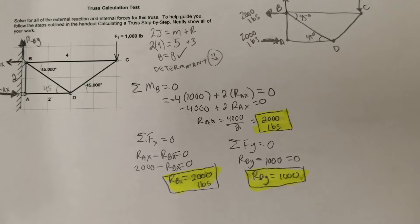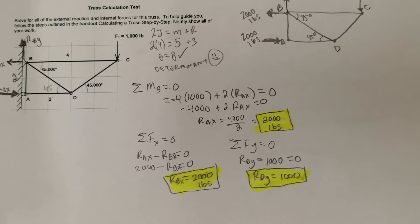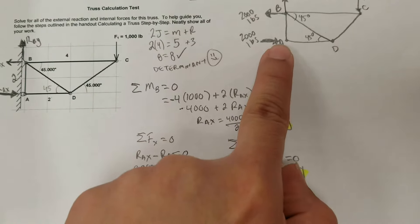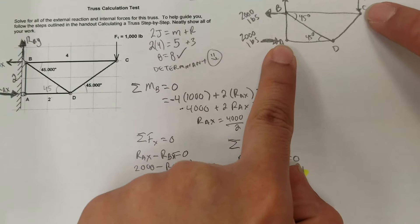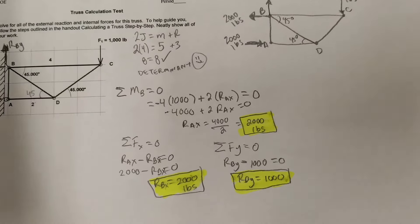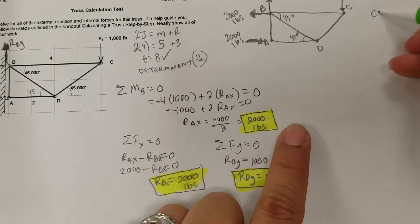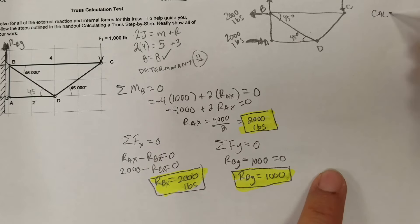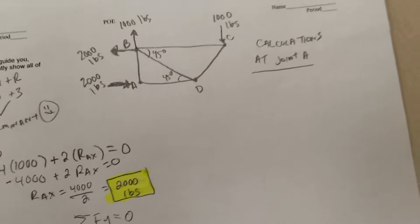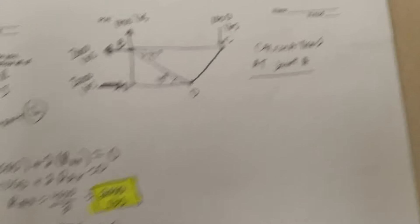Now we're going to use the method of joints to calculate the unknown member forces. It's up to you where you want to start, but I like to start at joints with the fewest members, because they're easier to solve. Joints A and C have the fewest members, so we'll begin with the calculations at joint A. I'll zoom in a little here.